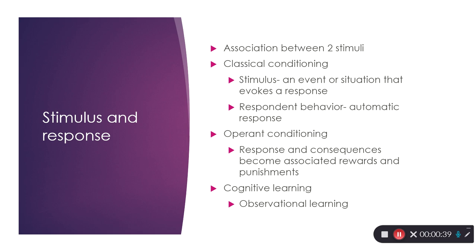When it comes to classical conditioning, this is the idea of stimulus and response — developing an association between two stimuli. We learn through stimulus and response. For example, when we see a pizza, we all of a sudden get hungry and we start to salivate. That is an unconditioned response to an unconditioned stimulus, pizza. We biologically have a response to food when we are hungry and we begin to salivate. We've learned over time that pizza equals food, so when we see it, we start to get hungry and salivate. There's an association between two stimuli.